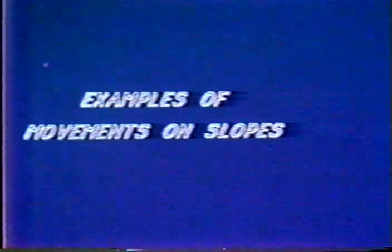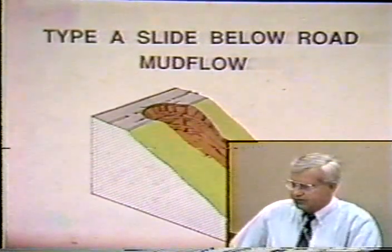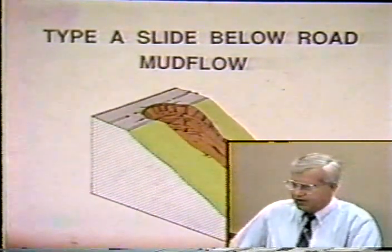Now let's look at examples of movements on slopes. First, we have what we call a mud flow, which may occur above or below the highway. We use the notation Type A, which is consistent with the FHWA report TS-85 and how the various states assigned letters to these types of slides. Mud flows generally occur in very silty and sandy materials, are usually shallow, and fail often with little warning. One thing to look for is whether water is running over from the pavement down onto the slope, as this is often a major cause.